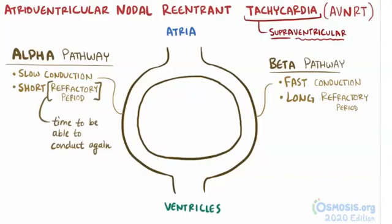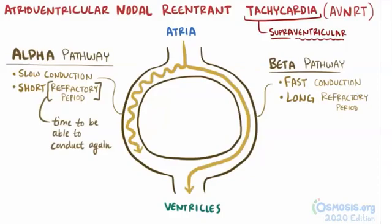So now let's say a signal comes down from the SA node in the right atrium. The signal goes down the fast pathway and reaches the other end before the slow pathway, and then splits to travel down to the ventricles, as well as up the alpha pathway, where it meets the slow signal and they both cancel each other out. At this point, both go into their refractory period.